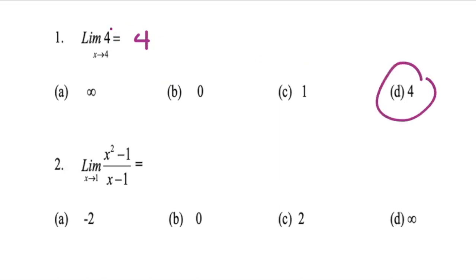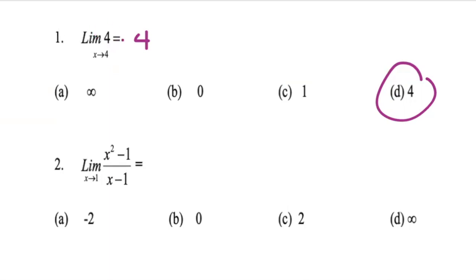So it means if I have the number 5 here, it doesn't matter what x is extending to — the limit of a number is a number, so the answer would have been 5. But in this case, we have the limit of 4, so the limit of 4 is just the number 4.